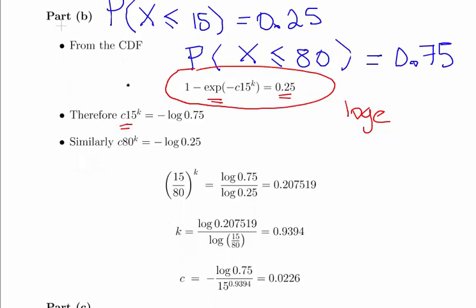So what we have here is two expressions with two unknowns. The simplest way to get started with this is actually just see if we can divide out C by looking at the ratio of the two expressions. So we have C times 15 to the power of K divide that by C times 80 to the power of K. And what we could do is re-express that as 15 over 80 to the power of K. And that is the ratio of the terms on the other side of the equation, log of 0.75 divided by log of 0.25.